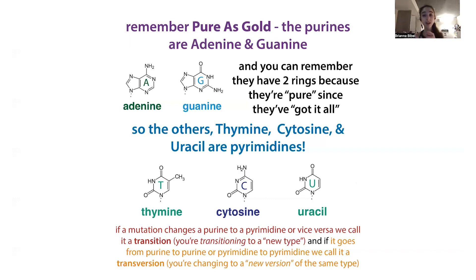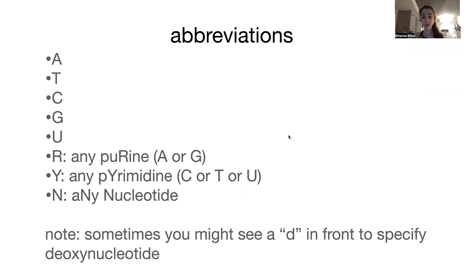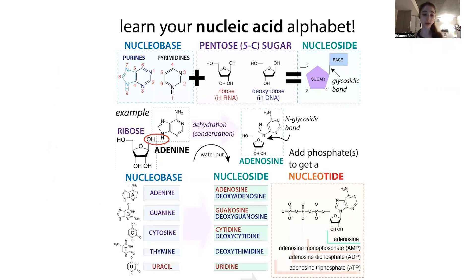When talking about mutations, if a mutation changes a purine to a pyrimidine or vice versa, we call it a transition — because you're transitioning to a new type. If it goes from a purine to another purine, or from a pyrimidine to another pyrimidine, we call it a transversion — you're changing to a new version of that same type.